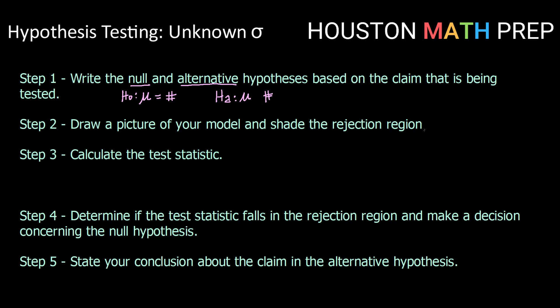In step two we're still going to be drawing our model and shading our rejection region, but because we don't know our sigma, our population standard deviation, we are going to be working with our student t distribution. So just like in confidence intervals when we were working with means with an unknown standard deviation we worked with the t distribution. That's going to be the same thing here.